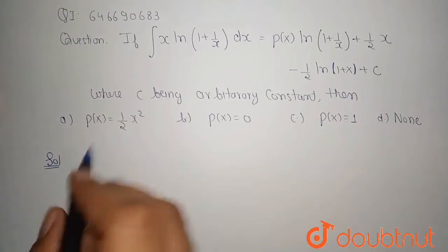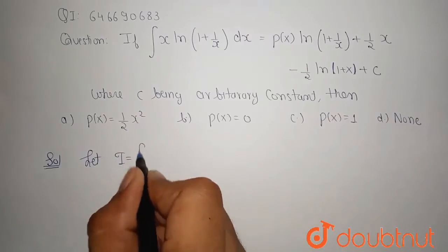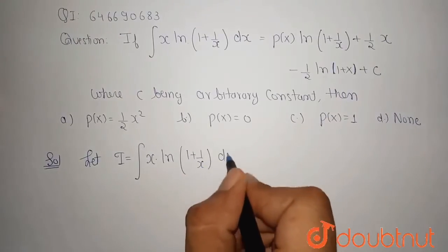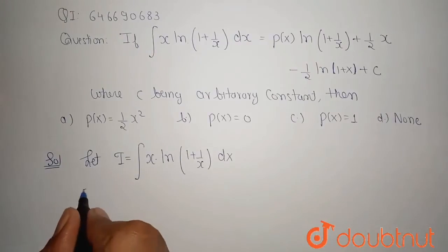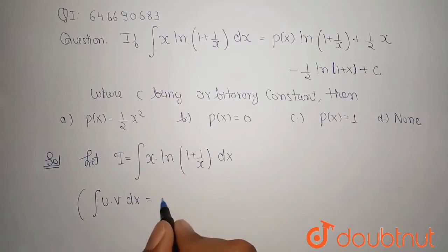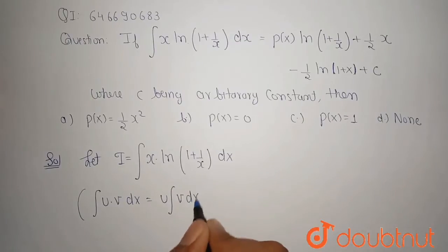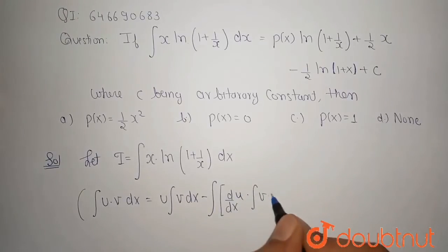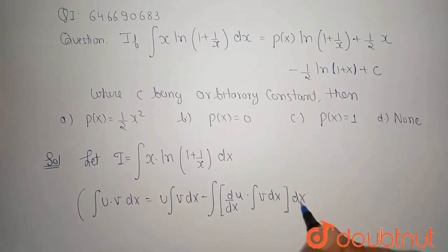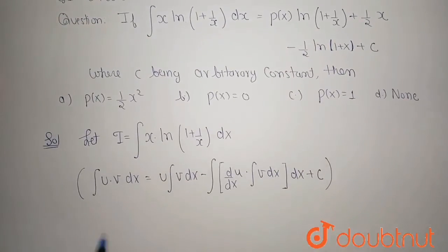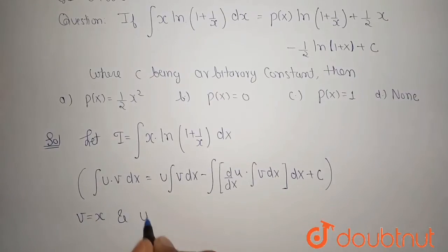As we can see, let I equal the integration of x times ln(1 + 1/x) dx. I can solve this using integration by parts. The formula is: integration of u times v dx equals u times integration of v dx, minus integration of (d/dx of u) times (integration of v dx) whole dx, plus c, where c is the integration constant. In our case, v equals x and u equals ln(1 + 1/x).